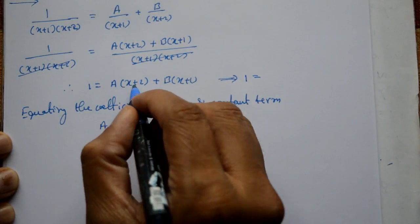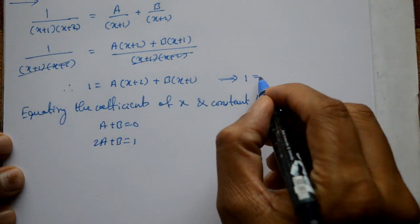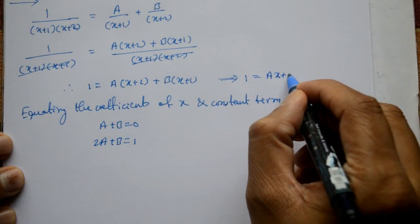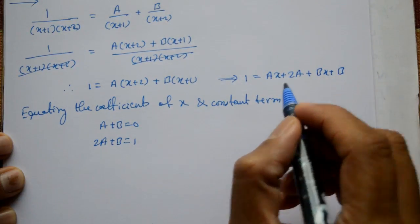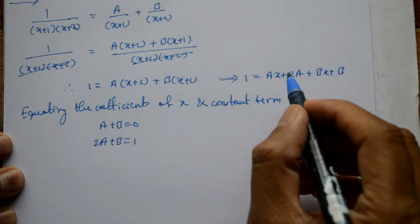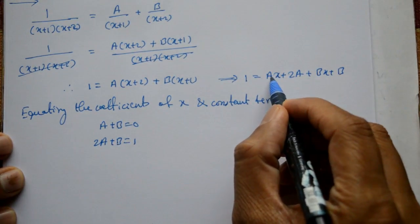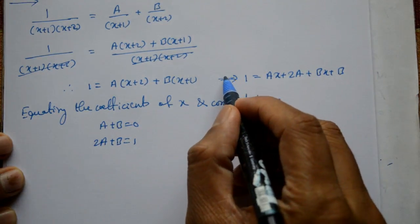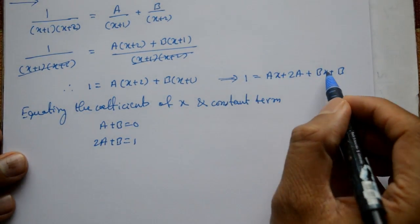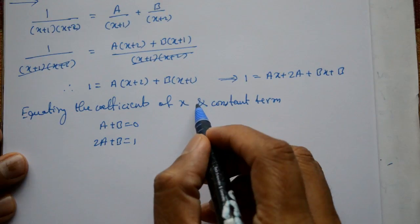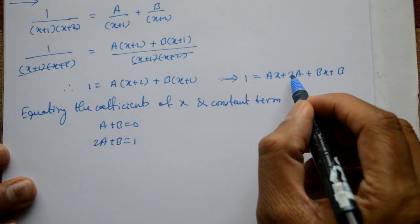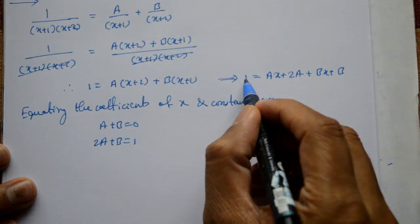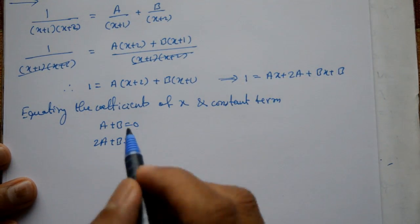That is, 1 is equal to ish bracket ko open karenge. Ye ho ga Ax + 2A, bad me Bx + B hoga. Taking coefficient of x lahenge, x coefficient kya hai, A + B. Either x coefficient nahi hai left hand side me, so A + B equal to 0 ah gaya. And taking coefficient of constant term lahenge, constant term kya hai number lahenge, 2A + B is equal to 1 hai.